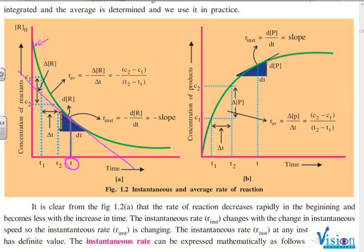Here on this tangent, the slope - the value of slope - that slope represents the instantaneous rate. The value of slope, normally in the language of mathematics, we have d[R] by dt. D[R] by dt.